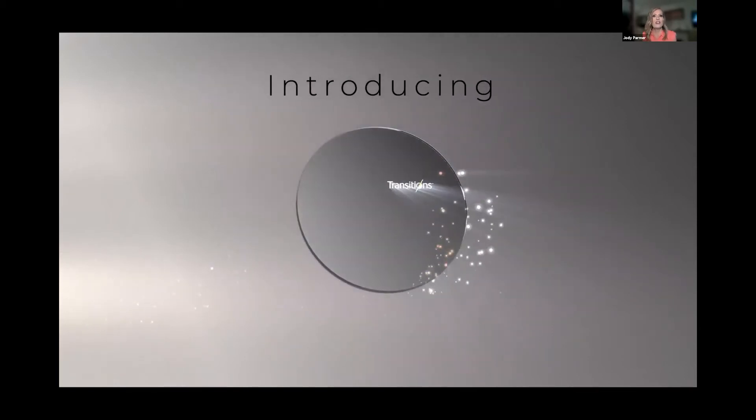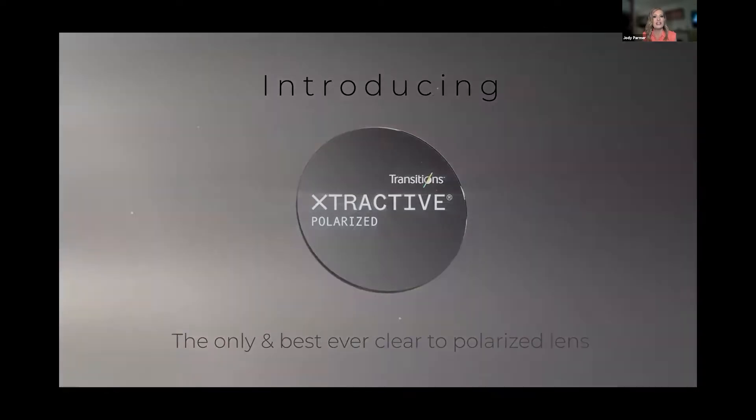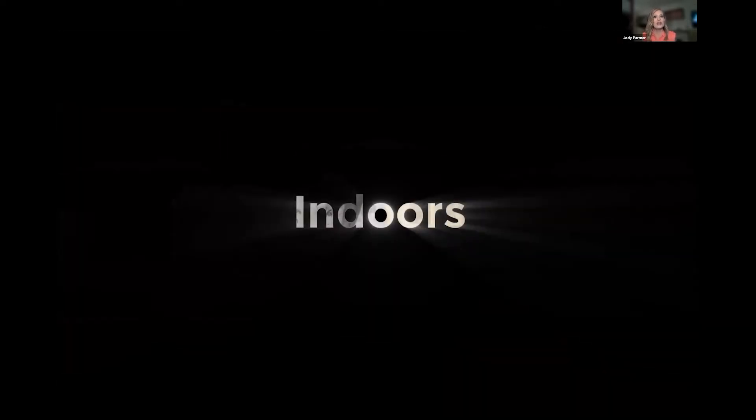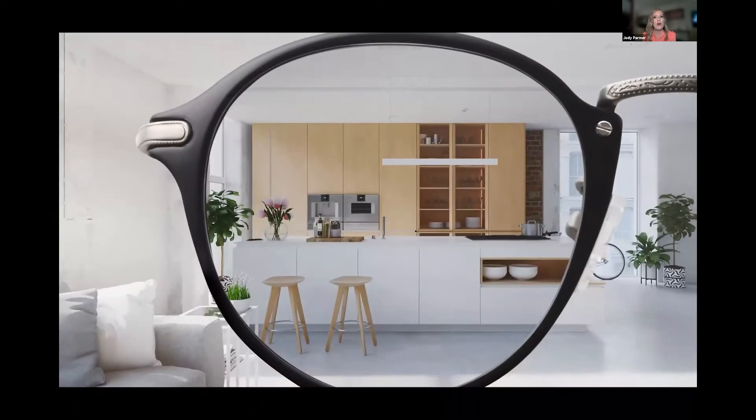Transitions Extra Active Polarized Lenses are the only and best ever photochromic polarized lens to defy glare. Indoors, these lenses are clear with a hint of protective tint for light sensitive wearers while also providing protection from harmful blue light.